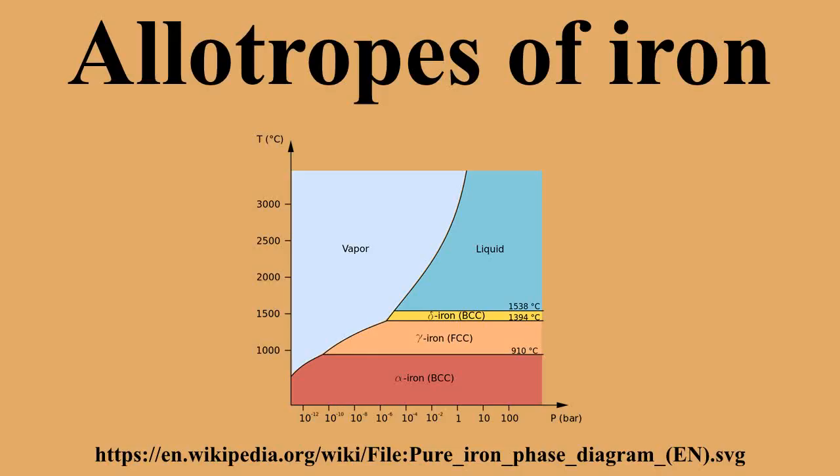Delta iron: As molten iron cools down, it solidifies at 1595 degrees Celsius into its delta allotrope, which has a body-centered cubic crystal structure. Delta iron can dissolve as much as 0.09% of carbon by mass at 1493 degrees Celsius.